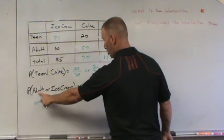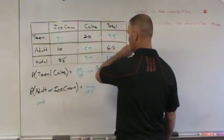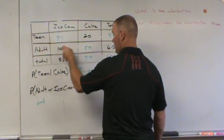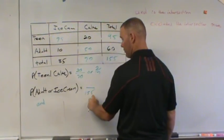So let's look at what we have here. Adult and ice cream. That would be 10 because that's where they intersect. If I drew two lines, one here, one here, that would be 10 out of 155.